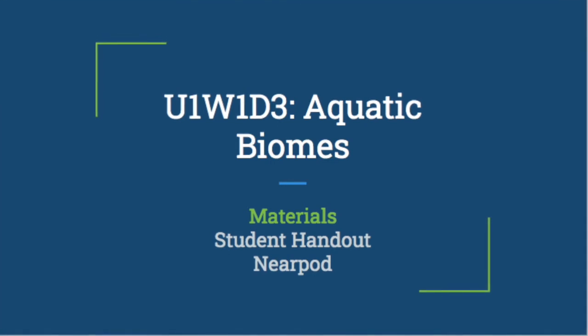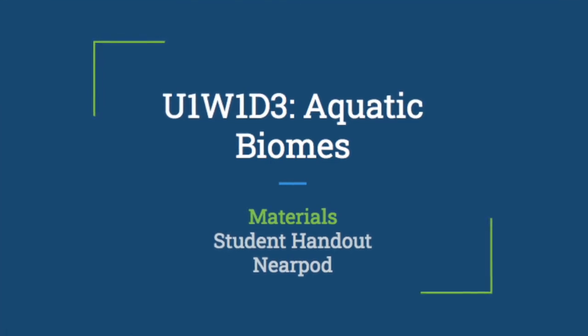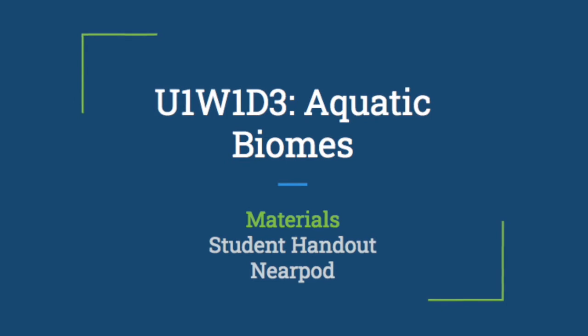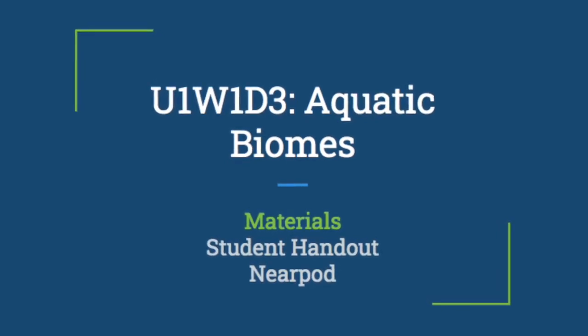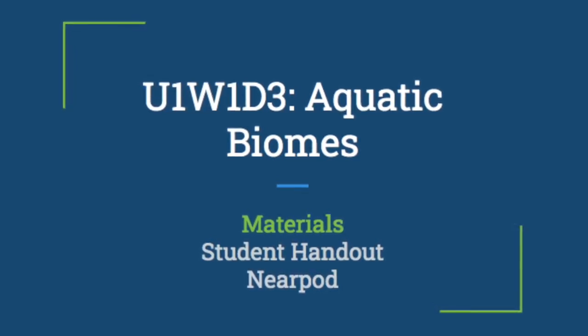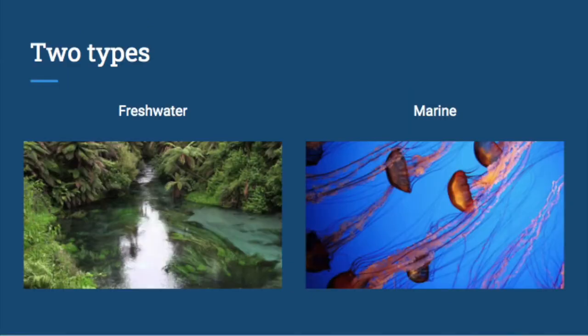Just like in the terrestrial biomes case, there are common characteristics — these biomes might be in multiple places. We're going to learn about coral reefs; you can find coral reefs in Florida, the Bahamas, and Australia, so they might be across the world but they share certain common characteristics, the most important one being that water is present. They can be classified into two different types: freshwater biomes and marine biomes. Freshwater has no salt or very low amounts of salt; marine water is salt water, ocean water.